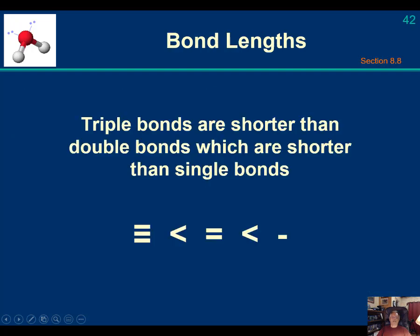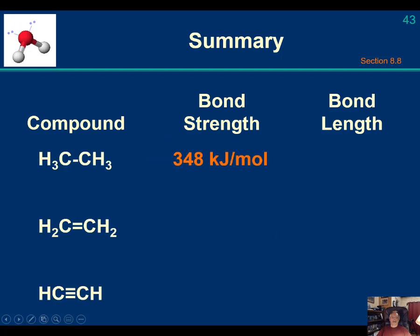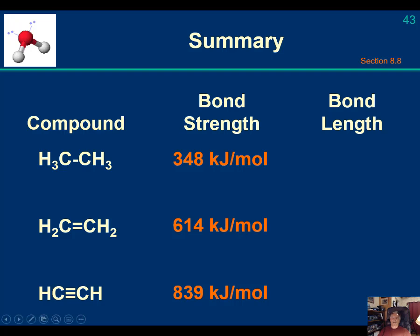Bond lengths: triple bonds are shorter than double bonds, which are shorter than single bonds. So single bonds are longer and weaker than double bonds, which are longer and weaker than triple bonds. However, a double bond isn't half the length and twice the strength of a single bond, and a triple bond isn't one-third the length and three times as strong as a single bond. That's because we have different types of bonding, which we'll be discussing.